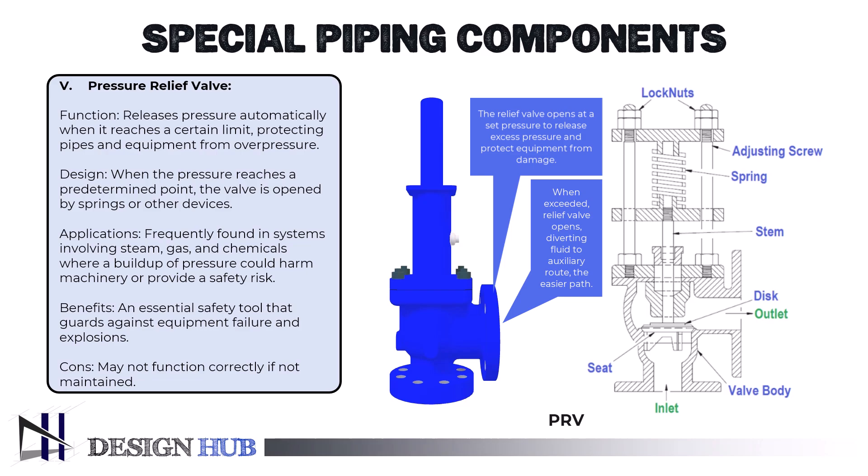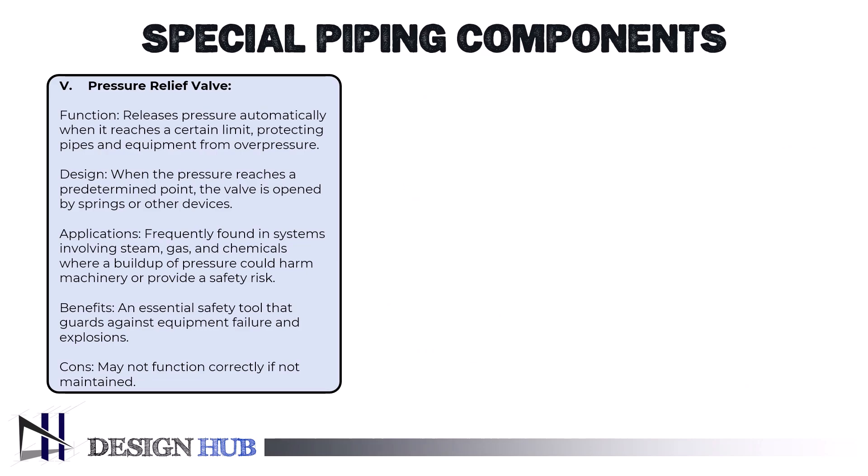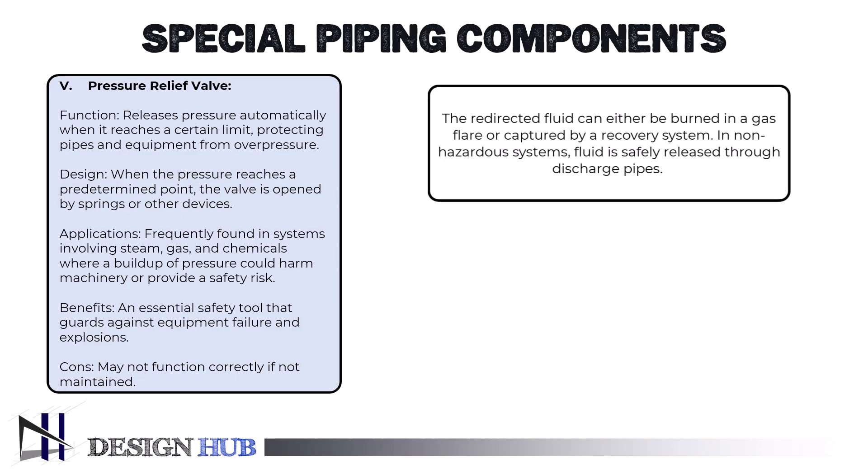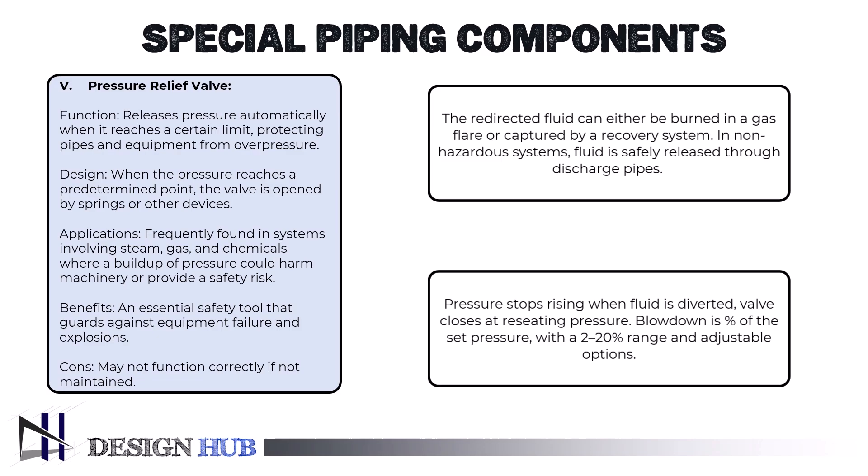As the relief valve is forced open and some fluid is redirected into the auxiliary route, it becomes the path of least resistance when the set pressure is surpassed. In systems containing combustible fluids, the diverted fluid — liquid, gas, or liquid-gas mixture — is either sent to a central elevated gas flare where it is burned, or captured by a low-pressure, high-flow vapor recovery system. In non-hazardous systems, fluid is often released into the atmosphere via appropriate discharge pipework positioned so as not to endanger personnel and prevent rainwater penetration, which can alter the set lift pressure.